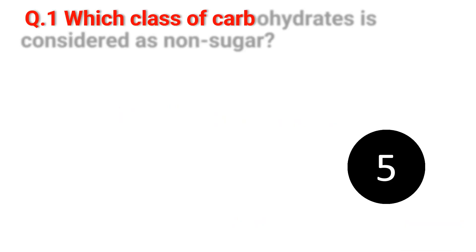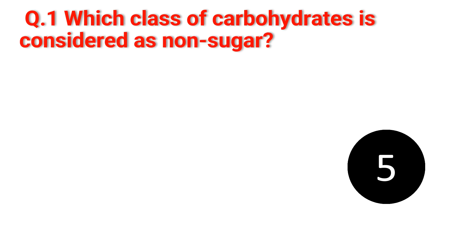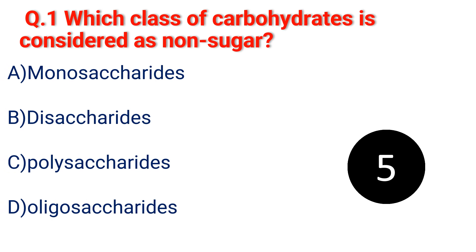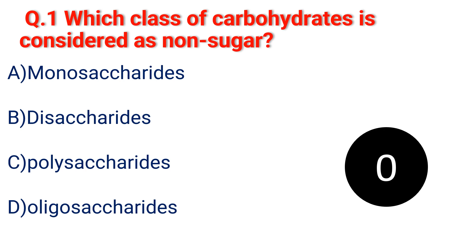Question 1. Which class of carbohydrate is considered as non-sugar? A. Monosaccharide. B. Disaccharide. C. Polysaccharide. D. Oligosaccharide. The answer is C. Polysaccharide.